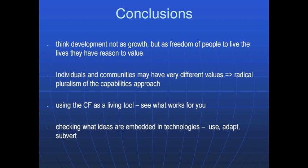To conclude: I've given you a run through several chapters in the book. Here are a few conclusions. We need to think of development not as growth but as freedom of people to live the lives that they have reason to value — we need to move beyond economic growth. We need to accept that individuals and communities may have very different values, and instead of getting everyone onto the same track, we need to understand that an approach of radical pluralism, like the capabilities approach, is far more morally appropriate and empirically correct.